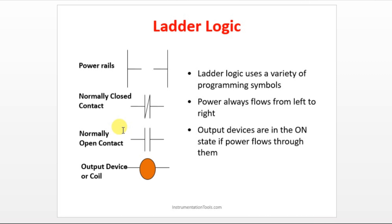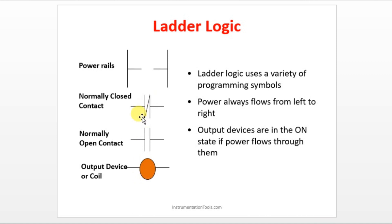Those type of switches are called as normally open contact. And we have one more contact which is called as normally closed contact. It is just opposite to normally open contact. Normally closed contact will always be allowing power to flow. Imagine your fan is always in on condition — if you disturb the switch, your fan will turn off. That is normally closed contact. We have an output device which in our example is a fan. This may be an input connected to the output. If you turn on, it will be on; if you turn off, it will be off. When it comes to normally closed contact, initially your output will be in on condition. If you disturb the switch, it will go to off condition.